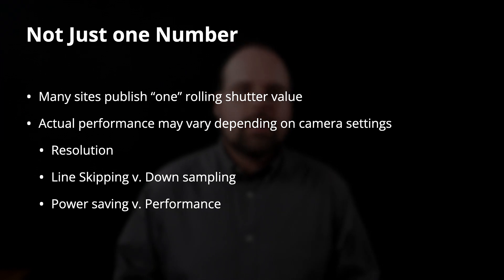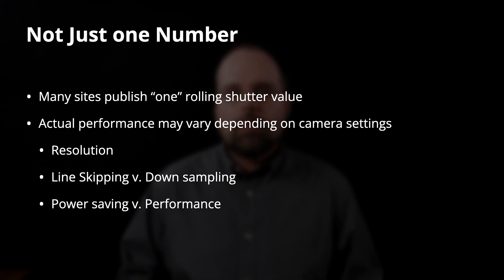Some examples of these factors — the big one is resolution. It takes about the same amount of time to read out any given pixel regardless of what you're doing with the camera. So if you have a higher resolution mode, say 8K versus 4K versus 2K, it will take longer to read out the sensor from a higher resolution mode than from a lower resolution mode. That will be the case if the camera is using line skipping to arrive at the lower resolution options, which is another factor that affects rolling shutter performance.